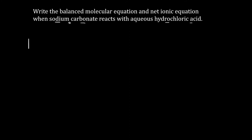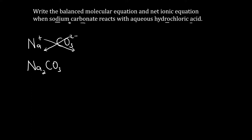Sodium in its ionic form is Na⁺, because it's in group 1 of the periodic table, and all alkali metals tend to have a charge of plus 1. Carbonate, CO₃, has a 2- charge — for polyatomic ions, you should be well conversant with their respective charges. We switch these charges and make them subscripts, giving us Na₂CO₃ for sodium carbonate, while hydrochloric acid is simply HCl.